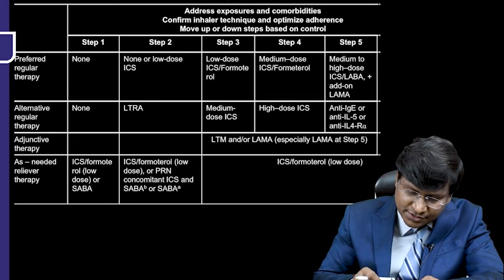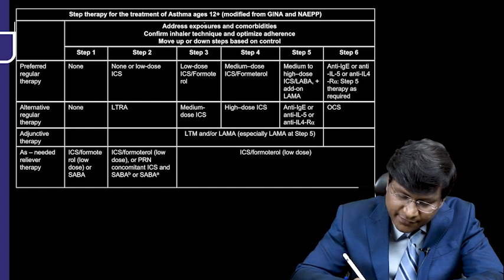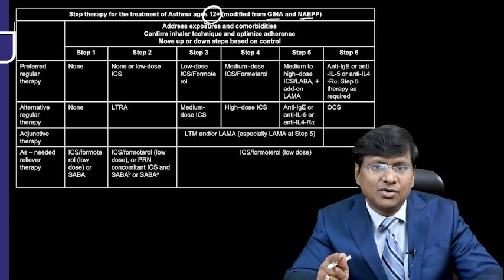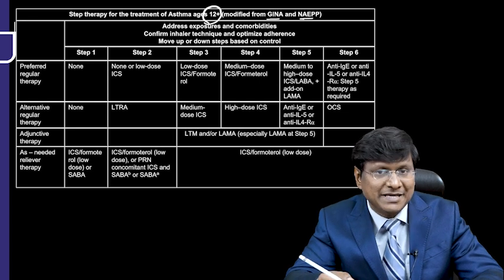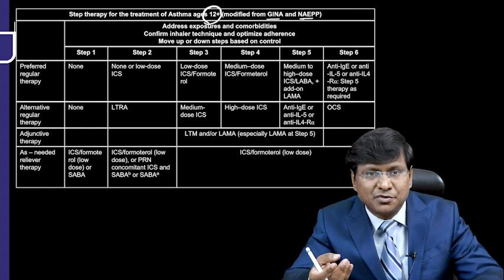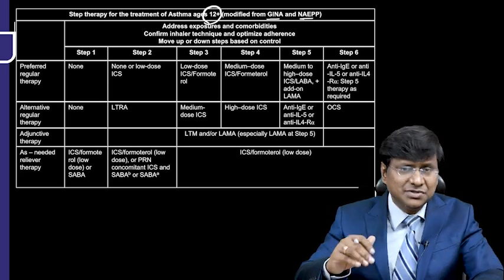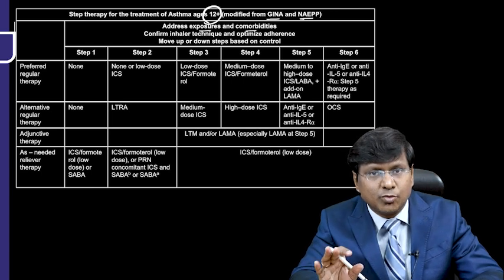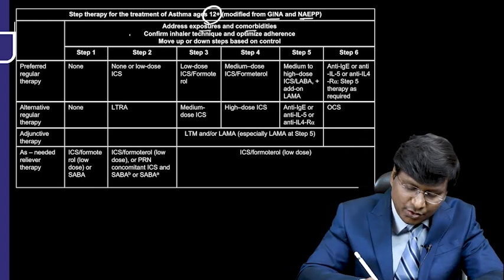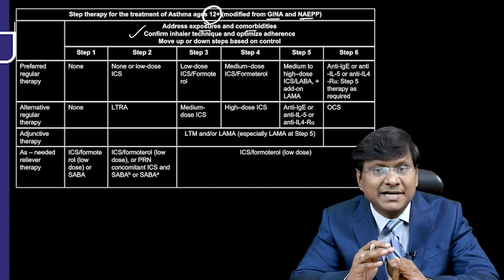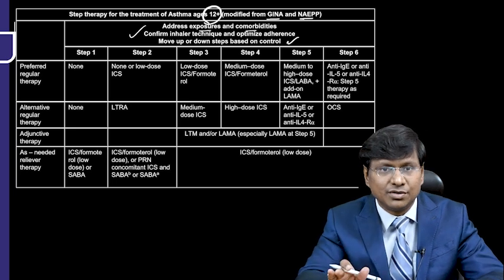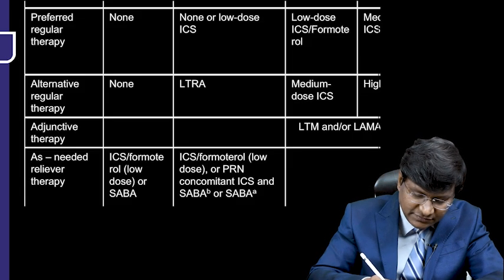Stepwise therapy for treatment of asthma — this is for age 12 plus, modified for GINA. GINA is the guideline given by the World Health Organization, whereas NAEPP (National Asthma Education and Prevention Program) is the guideline by the United States. You need to address first and foremost the exposures and comorbidities, confirm inhaler technique, optimize adherence, then move up or down steps based on control.